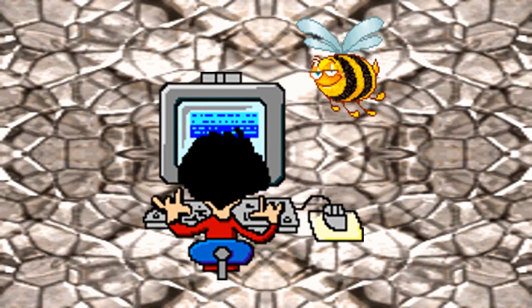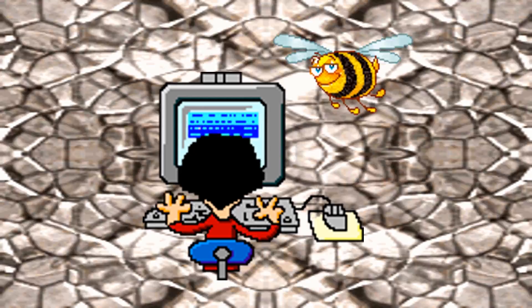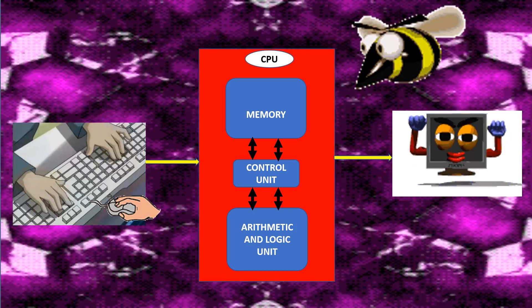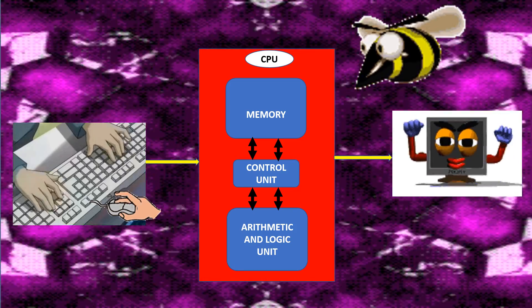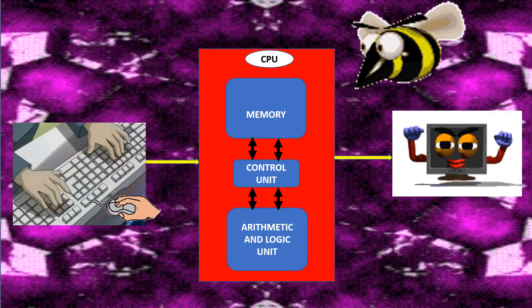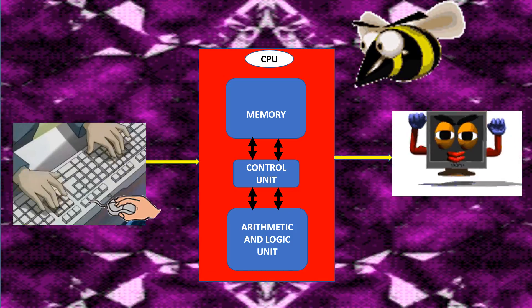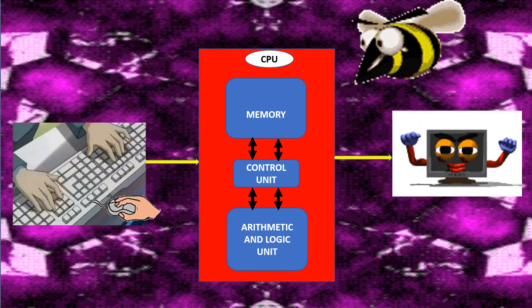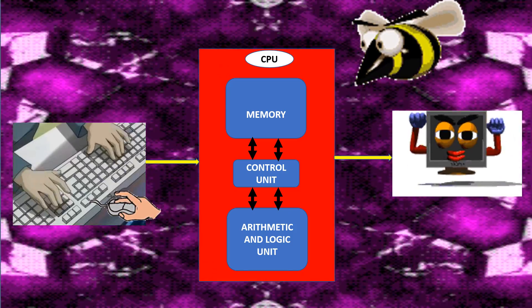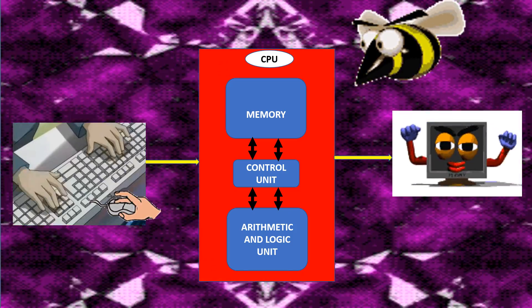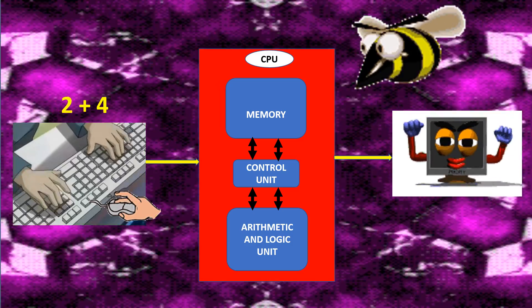Let's see how the computer functions with a small example. If we want to add two numbers, two and four, we use our keyboard to input two plus four.